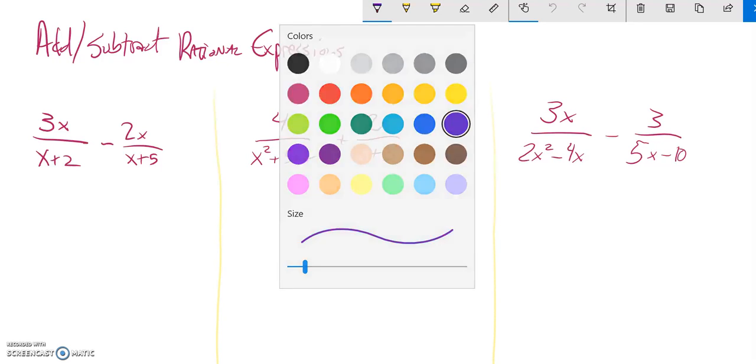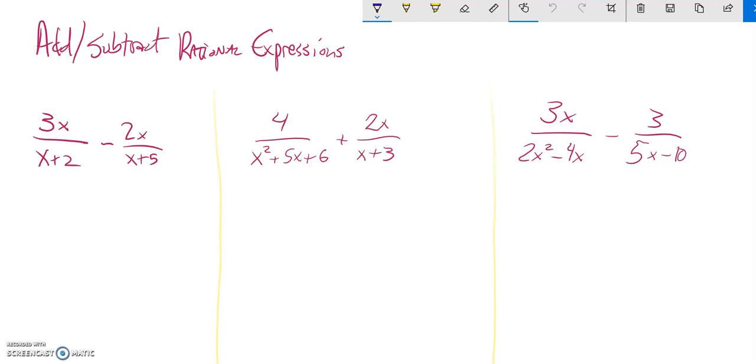Taking a look at this, notice I have x minus 2 as a denominator and x plus 5 as a denominator. So I want them to be the same. I'm going to have to multiply this by x plus 2 over x plus 2, and multiply this one by x plus 5 over x plus 5. I'm doing that so now they have the same denominator.